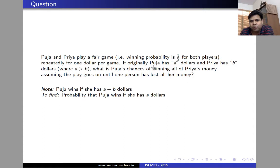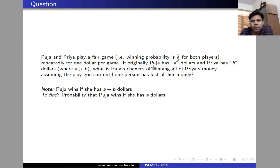If Pooja originally starts with A dollars and Priya originally starts with B dollars, let's assume without loss of generality that A is greater than B. We want to find what is Pooja's chance of winning all of Priya's money. We will assume that the game continues until one of the persons has lost all her money.